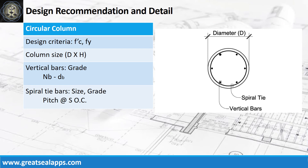Design recommendation format for circular column is as follows: design criteria, column size, vertical bars, and lateral tie bars.